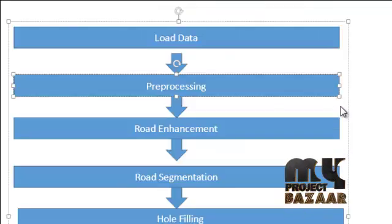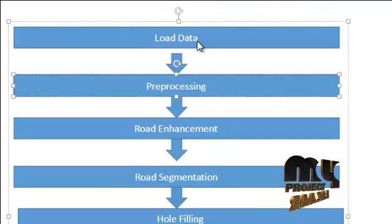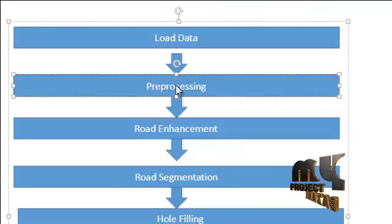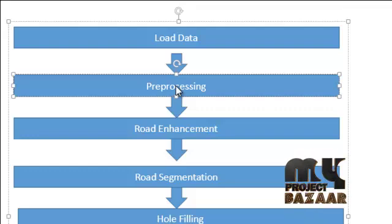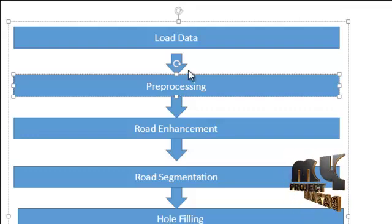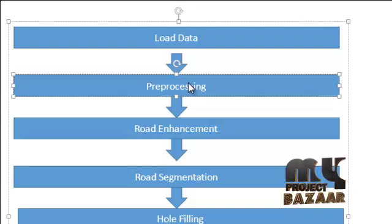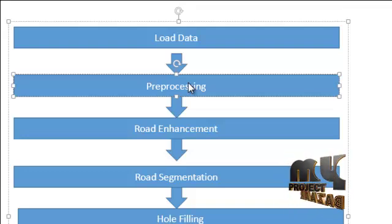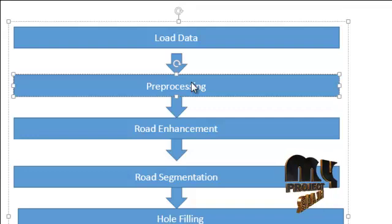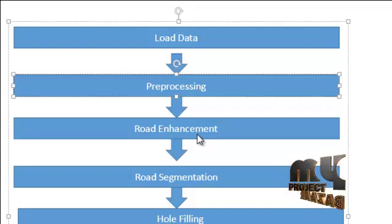First we load our input image, then we pass through pre-processing. In this module, noise removal is done. The noise removal process is performed by a median filter. Median filtering replaces each pixel value in an image by the median of its neighborhood, and then road enhancement is done.